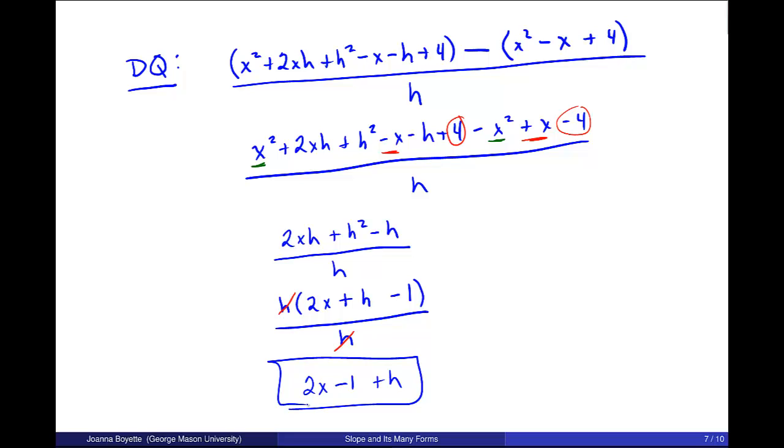So again, these are the three forms for slope. We talked about the average rate of change of a function. We talked about the secant line there. And we talked about the difference quotient as well. So please let me know if you have any questions about this stuff.